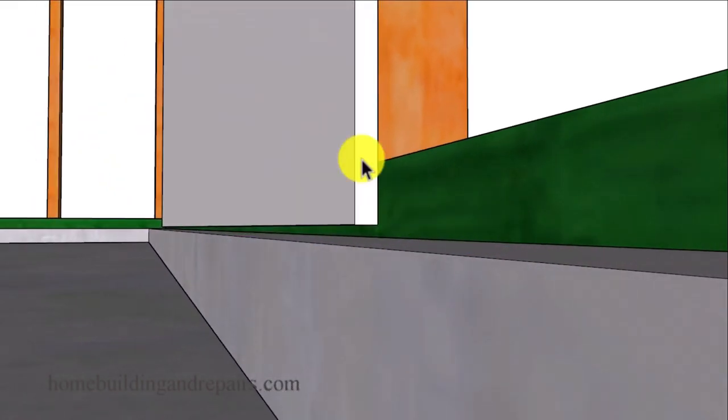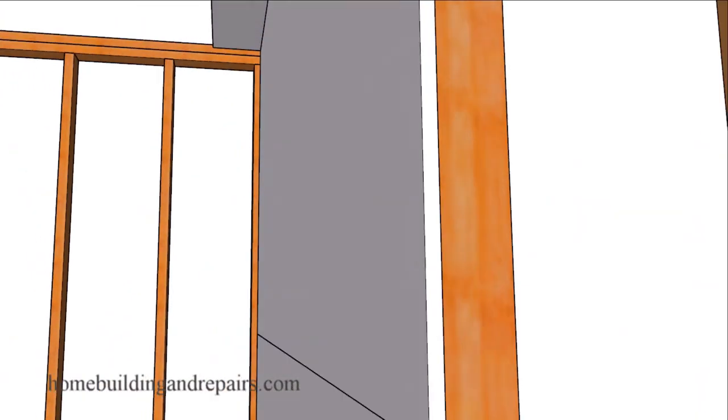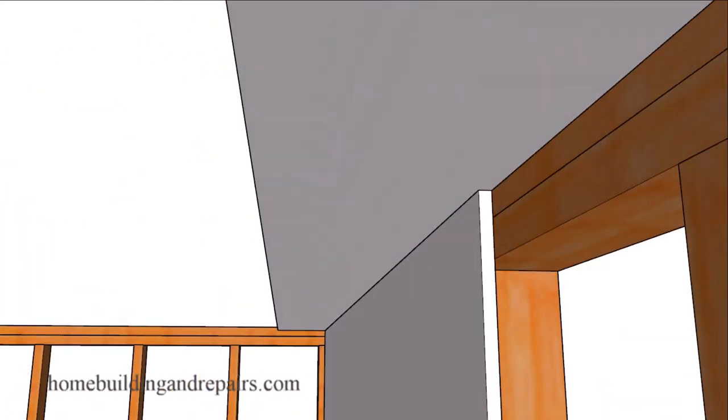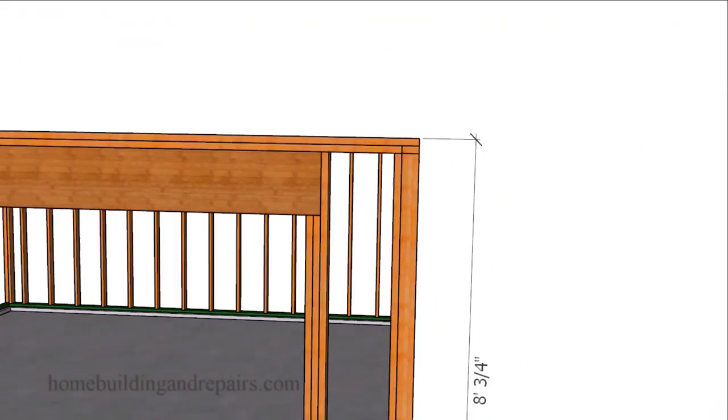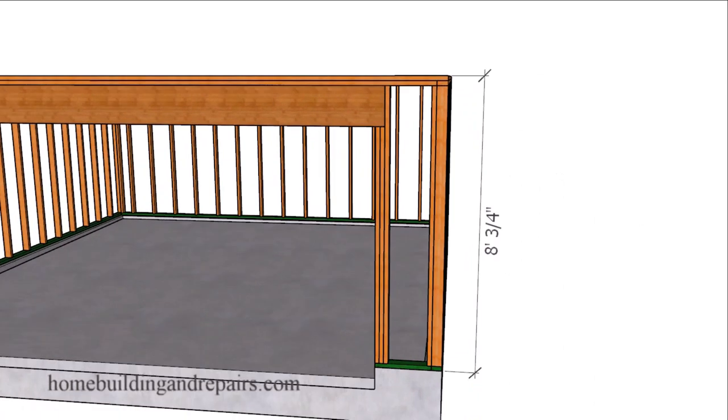So again, the 92 and a quarter inch wall framing studs allow us to use two 4 foot wide pieces of drywall installed horizontally, or one 4 by 8 piece of drywall installed vertically. But that's not going to be the case if we use 8 foot tall wall framing studs.